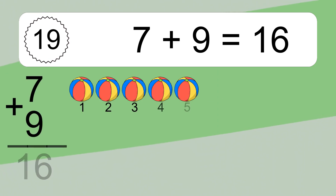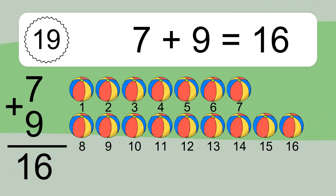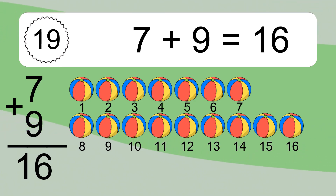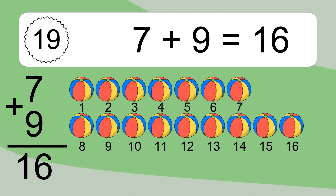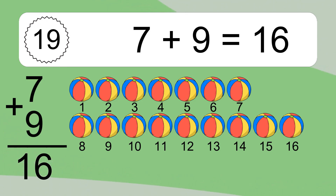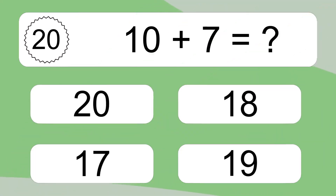7 plus 9 equals 16. Let's count it: 1, 2, 3, 4, 5, 6, 7, 8, 9, 10, 11, 12, 13, 14, 15, 16. 10 plus 7 equals what?